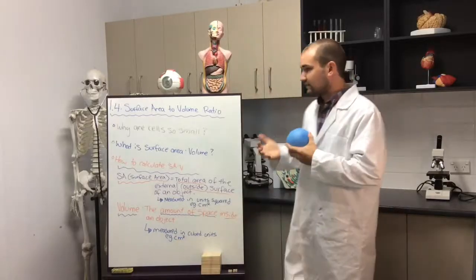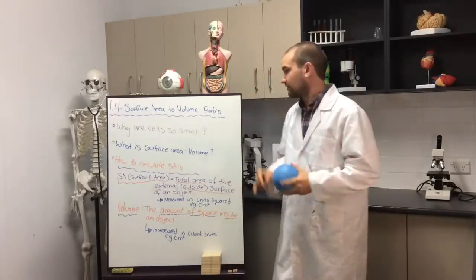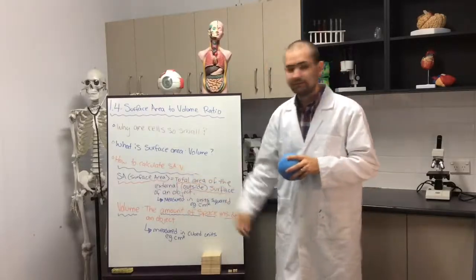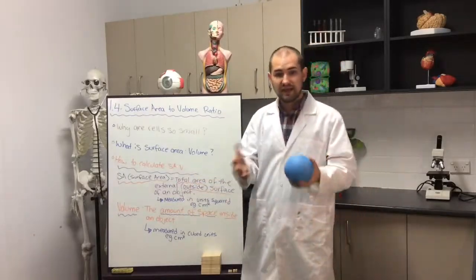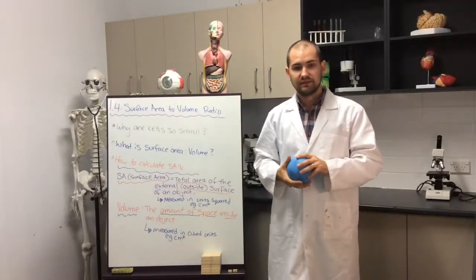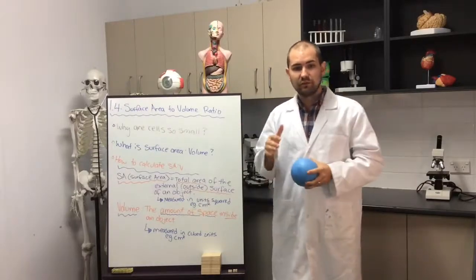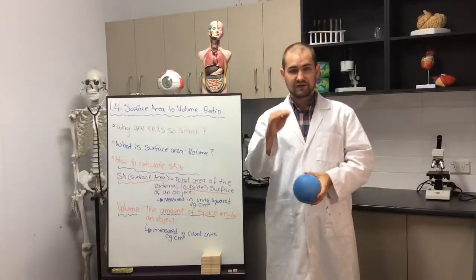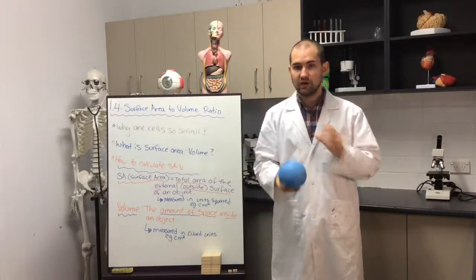We can use the surface area to volume ratio, or SA colon V, just like this here, to compare values between different objects. Cells want to have a really high surface area to volume ratio for them to function effectively and efficiently, so working at their best.